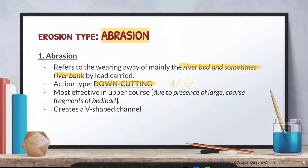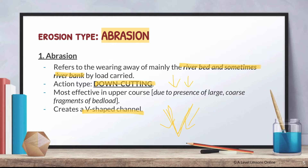The upper course tends to have a lot of huge rocks — think about a mountain. As you go down to the lower course, there are much finer sediments. The large, coarse bed load in the upper course causes a lot of turbulent flow, which stimulates abrasion. Because of this down-cutting action, abrasion will form a V-shaped channel.